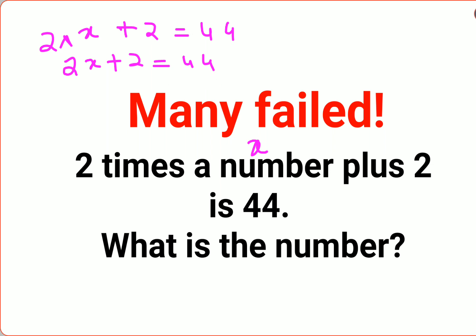And in order to find the value of x, we will shift all the numbers on the other side. So basically you got 2x equals to 42.